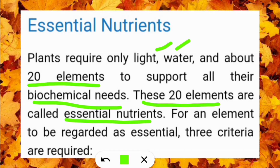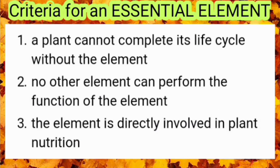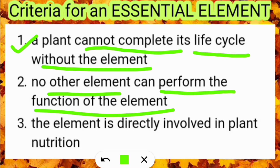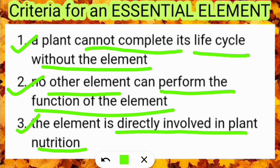Essential nutrients hone ke liye teen criteria hain qualify karne ke liye. What are these three criterias? Number one is a plant cannot complete its life cycle without that element. The second criteria is no other element can perform the function of that element — there is no other option. It is not that if aluminium is not present, copper can do that work. Number three is the element is directly involved in plant nutrition — woe element plant ke nutrition ke liye directly involved hona chahiye, na ki indirectly. If some element has these three criteria, then it is called an essential element.